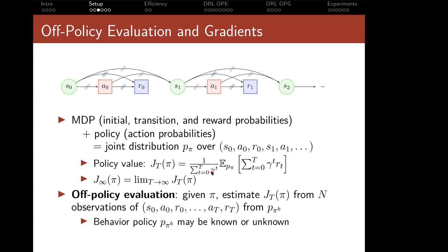The off-policy evaluation task is: given a specified policy π, estimate the value of this policy when the data you get is n observations of T-long trajectories from playing a different behavior policy π_b. The behavior policy may be known or unknown. The key difficulty of policy evaluation is that the expectation we want to estimate is with respect to one distribution, but the data comes from a different distribution, so we can't just take simple sample averages.